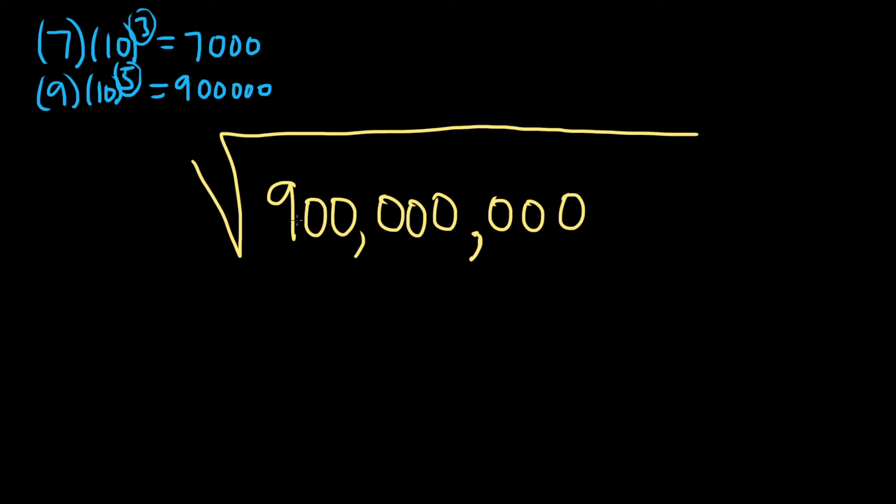So here, all we have to do is count the zeros. Let's see, so we have 1, 2, 3, 4, 5, 6, 7, 8. So this is the same as the square root of 9 times 10 to the 8th power. And let's just double check, we should have 8 zeros. 1, 2, 3, 4, 5, 6, 7, 8.